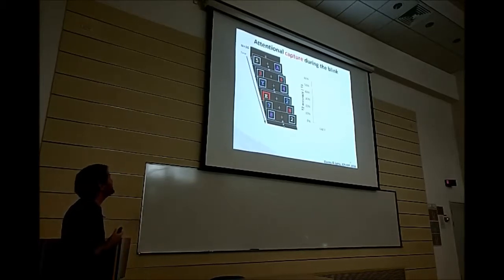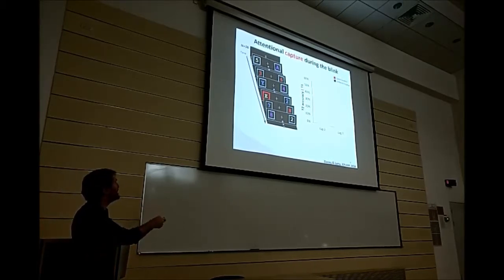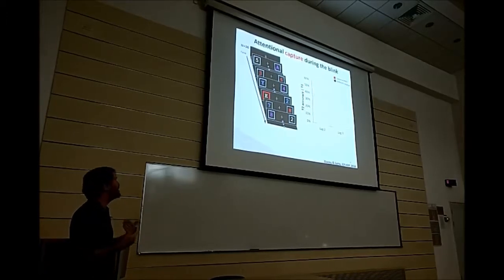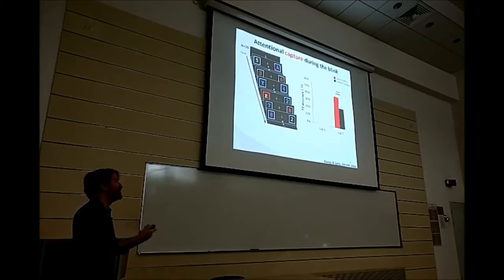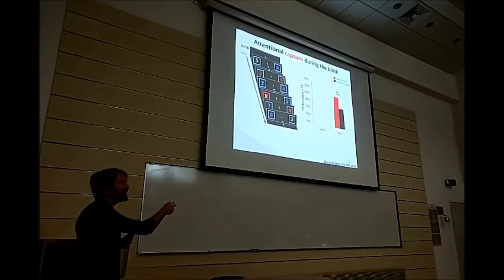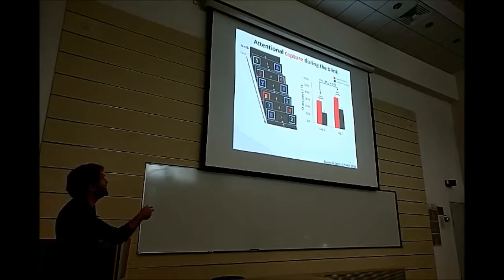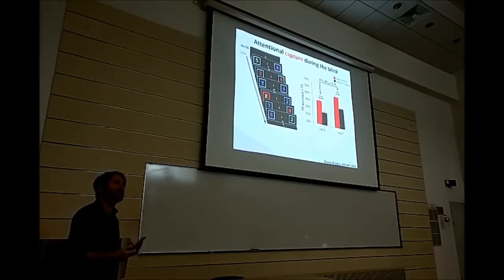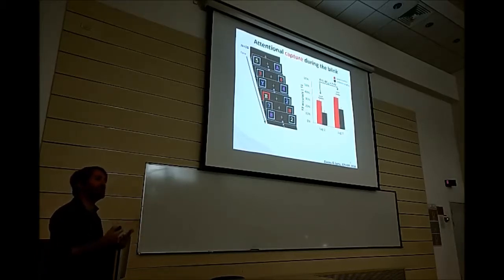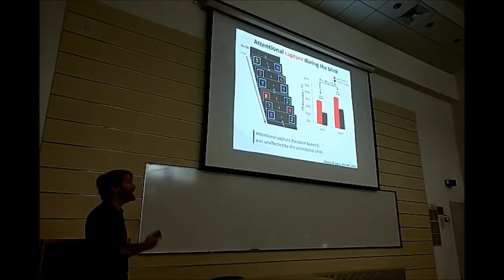Now that we have the two measures, we first look at how attentional capture fares during the blink. We have T2 accuracy at lag 2 and lag 7, either in the same or a different location as the cue. At lag 7, outside the blink, we see a large location benefit — accuracy is higher when we're cued to the correct location. And when we're inside the blink at lag 2, we see the same location benefit. This difference is not significant, and a Bayes factor supports the null hypothesis. We conclude that attentional capture, as indicated by the location benefit, is unaffected by the attentional blink.